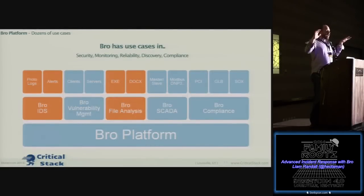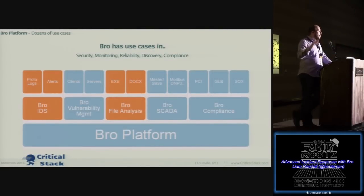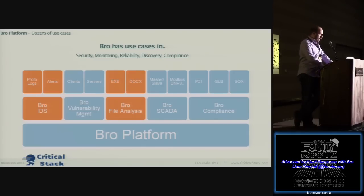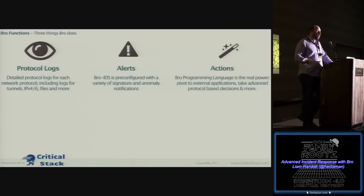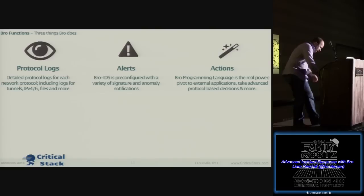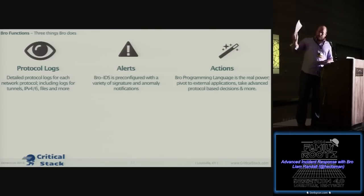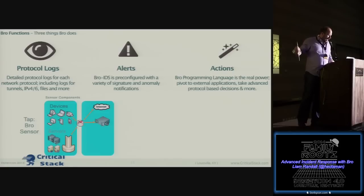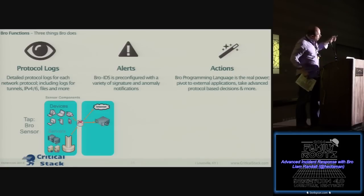So Bro is made of three layers. The first thing that Bro does is — it generates logs. This is Bro's fit on the network.